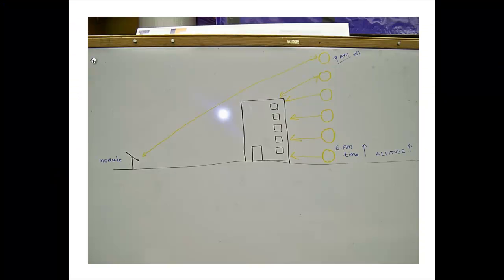Hi. Before going to the shadow loss section, let us have a quick look at the altitude and azimuth angles. Suppose we have a module like this, where the shadow loss is maximum at the lower edge of the module.